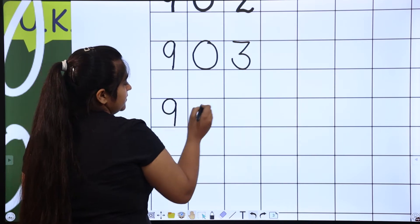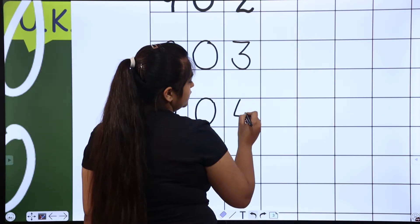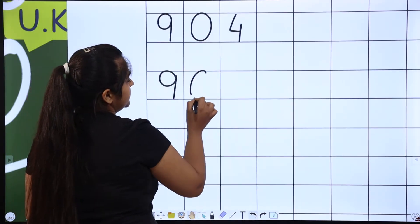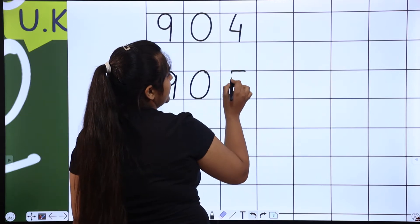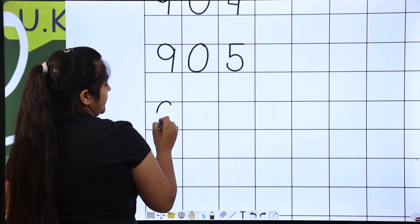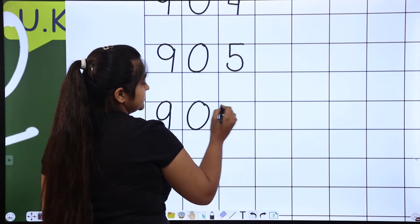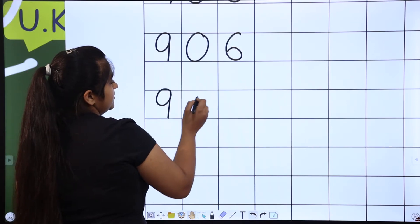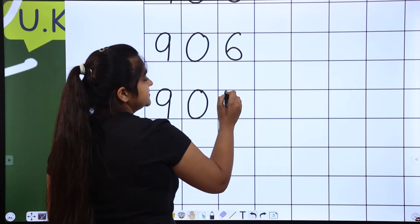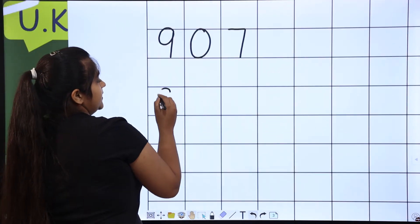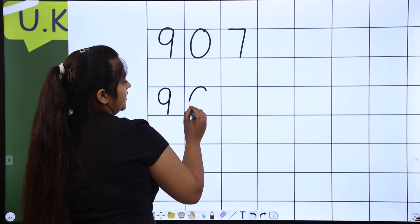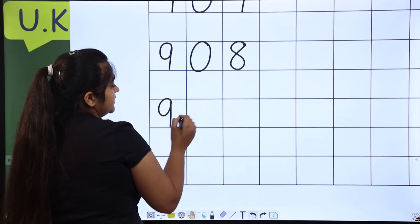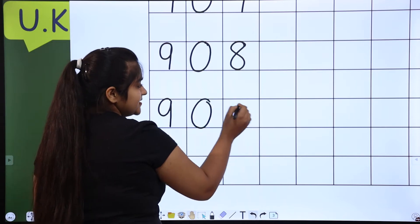9 hundreds, 0 tens, 4 — that is 904. 9 hundreds, 0 tens, 5 — that is 905. 9 hundreds, 0 tens, 6 — that is 906. 9 hundreds, 0 tens, 7 — that is 907. 9 hundreds, 0 tens, 8 — that is 908. 9 hundreds, 0 tens, 9 — that is 909.